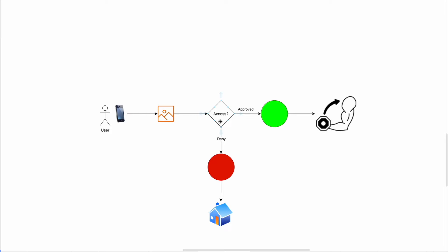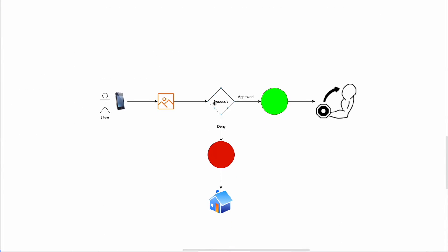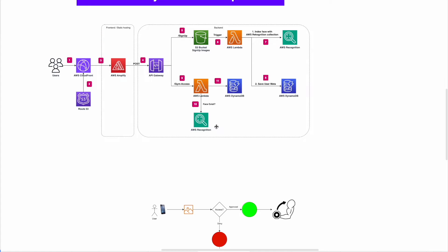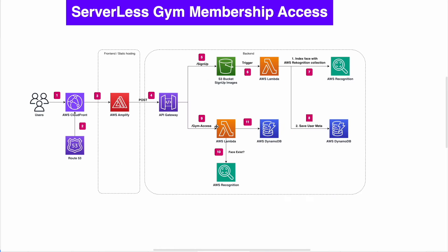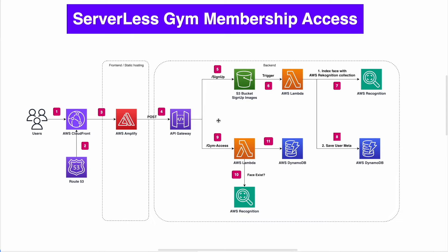Once the picture is uploaded, the system analyzes the image and checks if the user is in the collection. If yes, they can go work out; if not, they are denied access. Let's review our gym membership serverless system — each step is numbered for clarity.